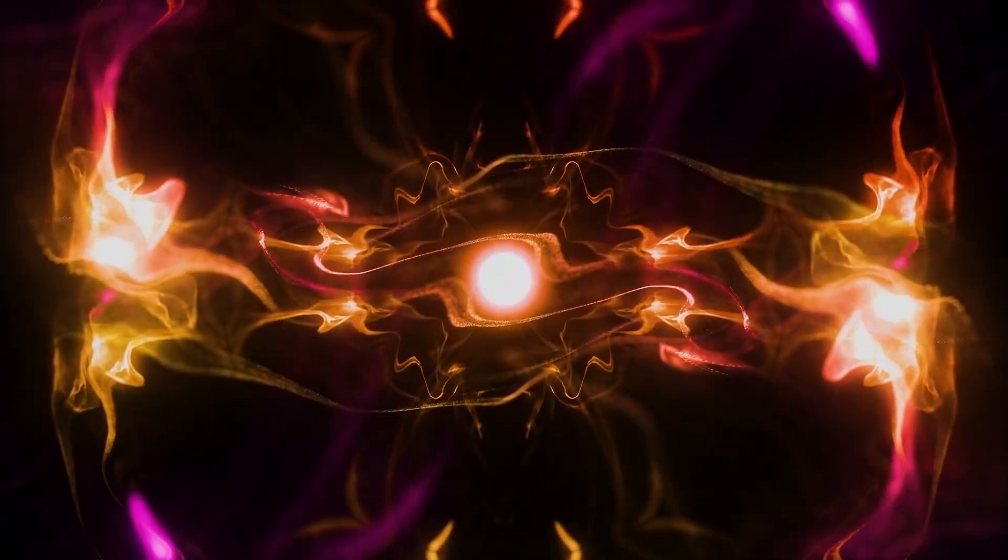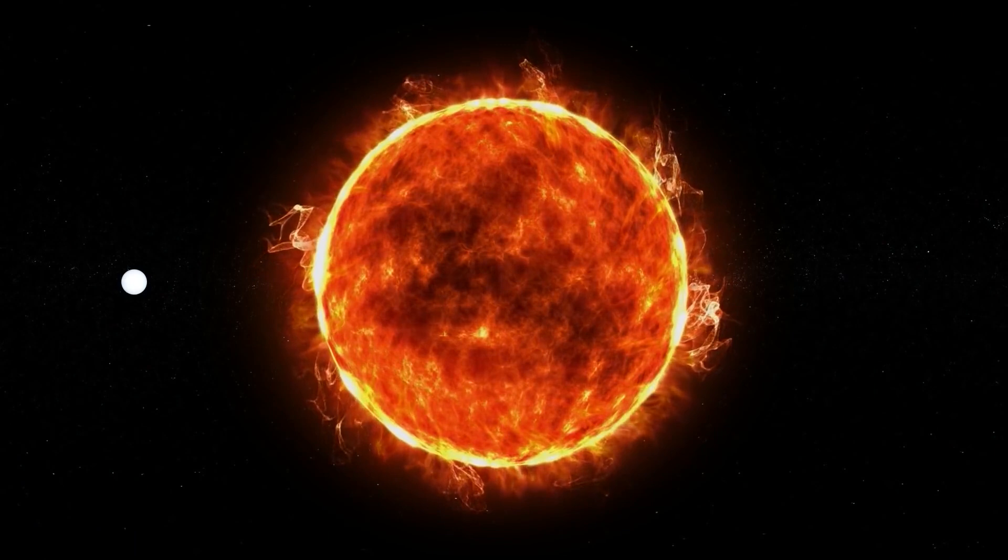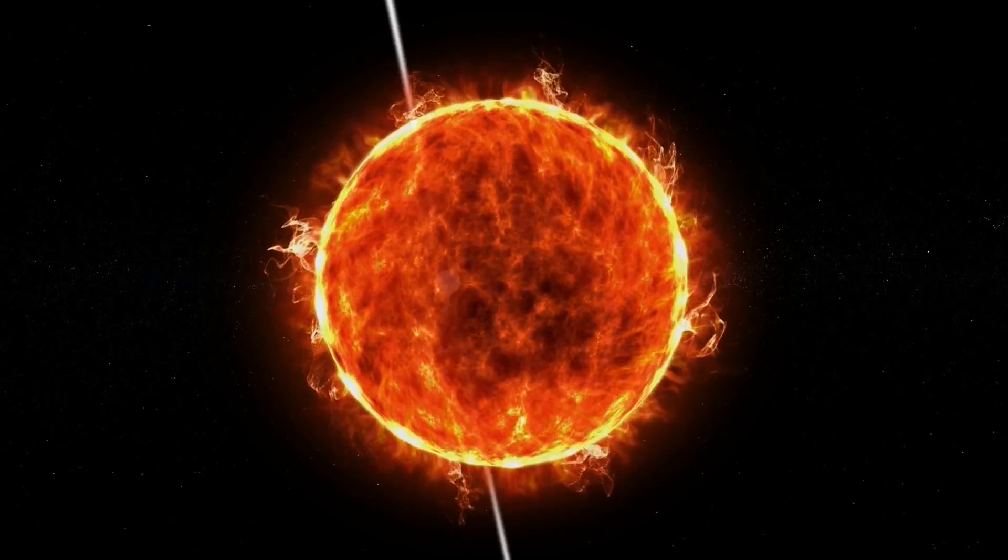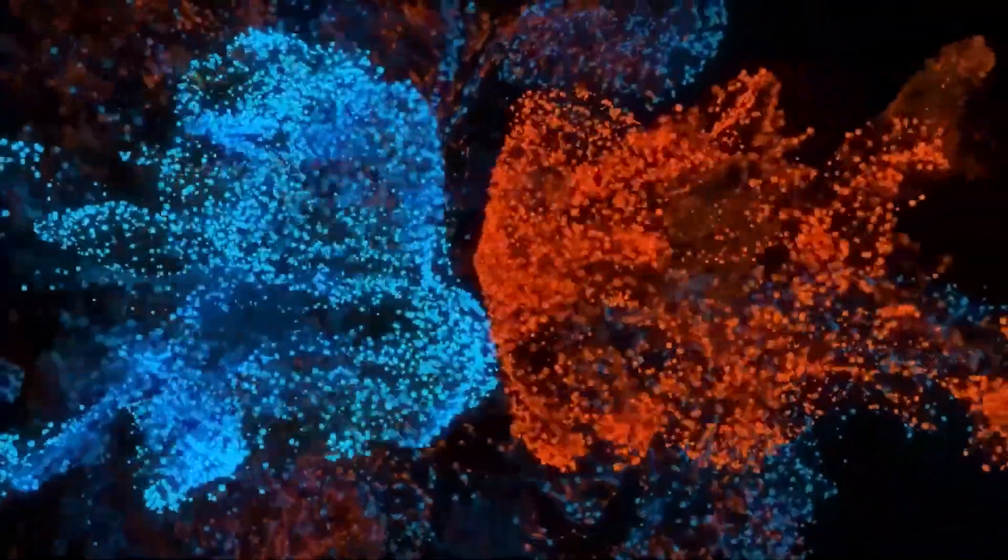Each of these gas clouds can contain enough matter to form anywhere from a few dozen to many thousands of stars. When the gas particles contained in the molecular cloud constantly collide with each other, heat energy is produced. As the temperature keeps rising due to this reaction, it results in the formation of a warm clump of molecules called a protostar. This is the second stage of stellar evolution.